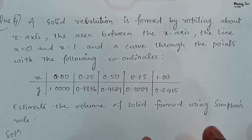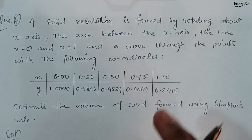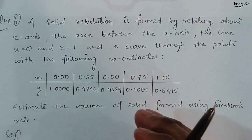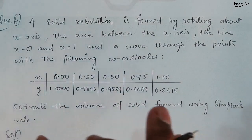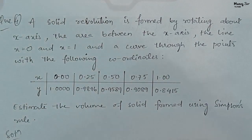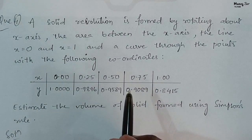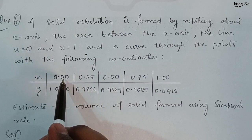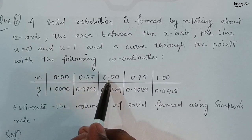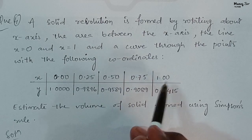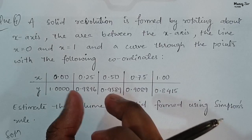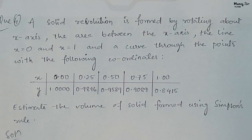We need to estimate the volume of the solid formed using Simpson's rule. Nothing is mentioned about whether to use Simpson's one-third rule or Simpson's three-eighths rule, so we will see in detail how to use each and which rule to follow in this particular problem. The difference or interval size, width h, is 0.25.